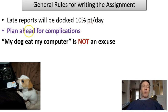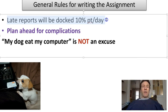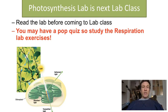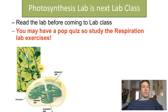I will reduce scores on late lab reports by 10% per day, so if it's about a 30-point assignment, you would lose about 3 points per day. Instead of waiting to the last minute, please plan ahead for complications. And one more reminder: in our lab next week we will be studying photosynthesis. Whether or not there is a quiz scheduled, we are always allowed to give pop quizzes, so you should review your respiration notes prior to lab next week.